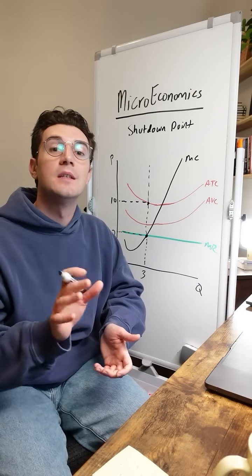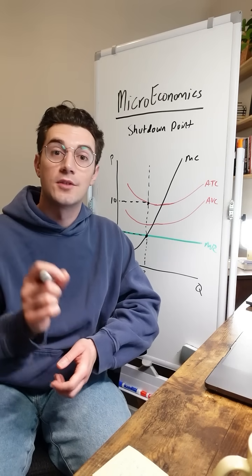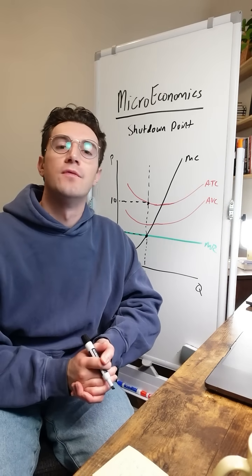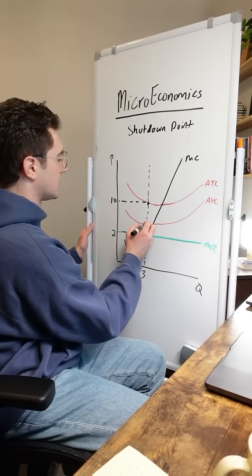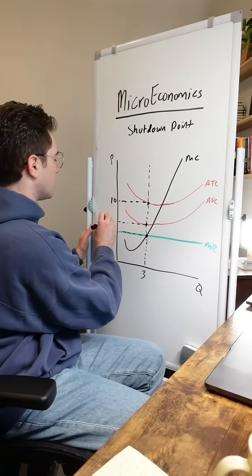Just because they're generating a loss though, doesn't mean that they should necessarily shut down. They should only shut down if the price that they're selling each good at is below average variable cost. In this case it is, because average variable cost happens right here at three units. We'll say that correlates to a price of four bucks.